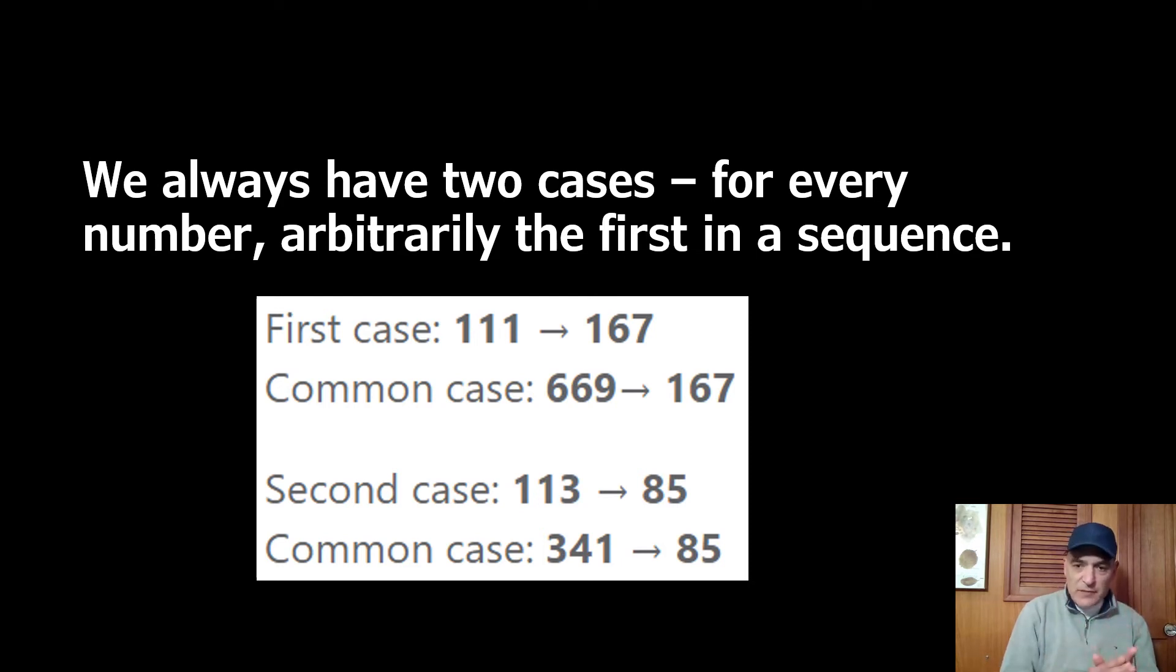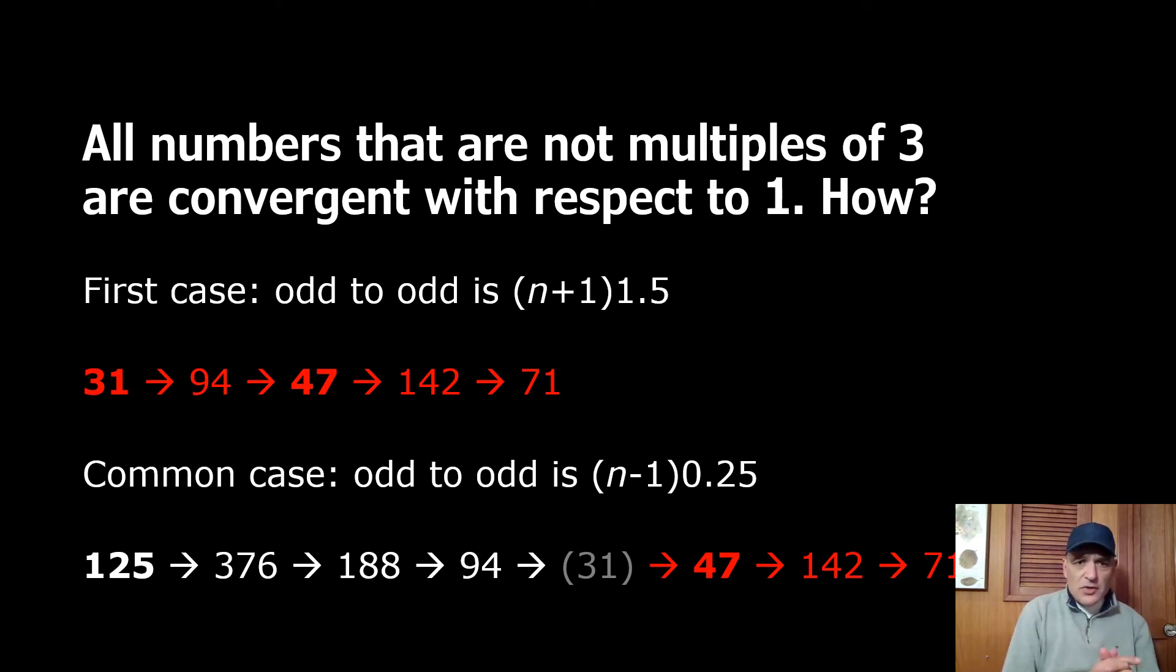All numbers that are not multiples of three are convergent with respect to one. Here's another illustration, first case, and we're only considering odd to odd. These are odd even sequences but we only care really about the odd to odd which is (n+1) times 1.5 minus 1 produces 47.